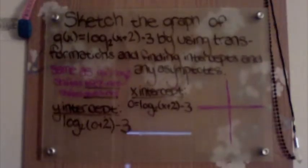I'm going over the problem that states sketch the graph of g(x) = log base 2 of (x+2) minus 3, by using transformations and finding intercepts and any asymptotes.